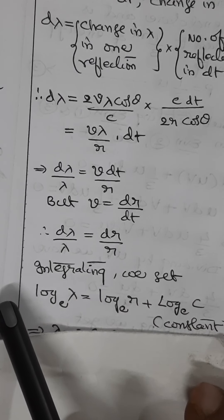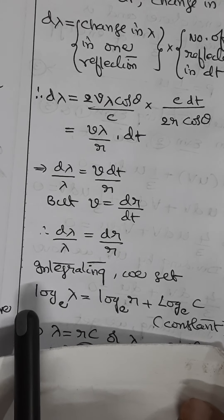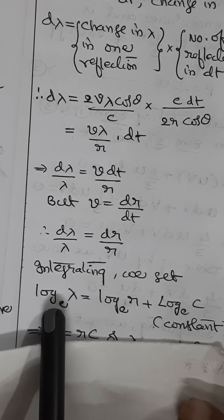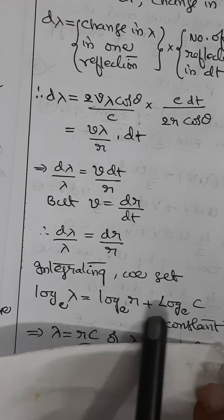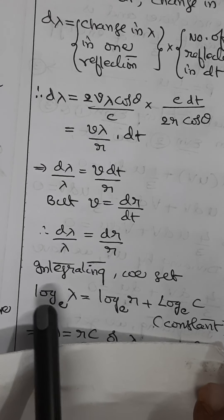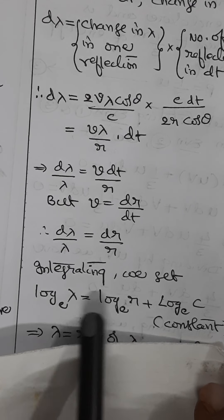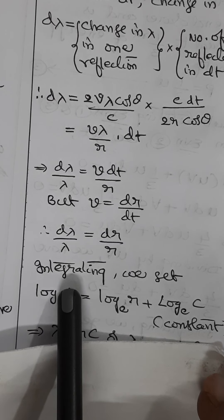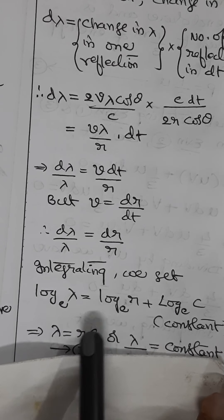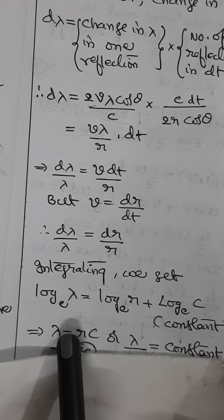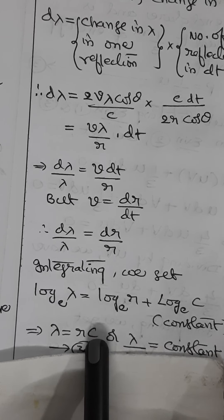Integrating dλ/λ = dR/R gives log λ = log R + log C (a logarithmic constant), so λ = R·C, or equivalently λ/R = constant. Let this be equation 3C.